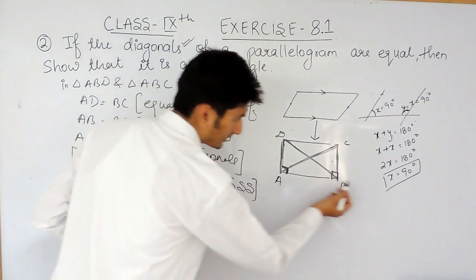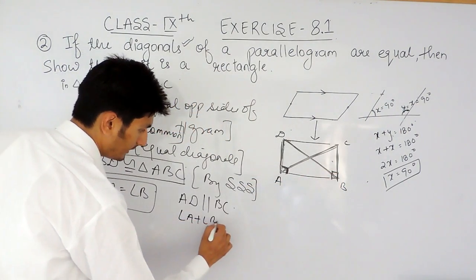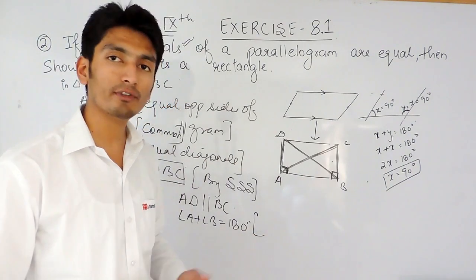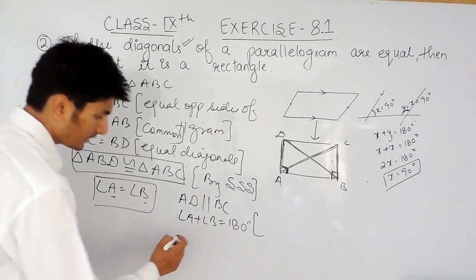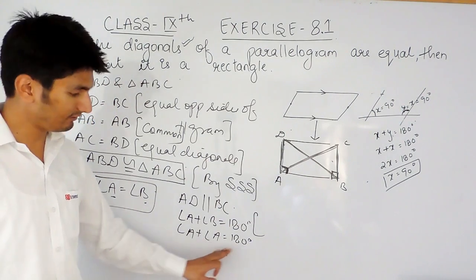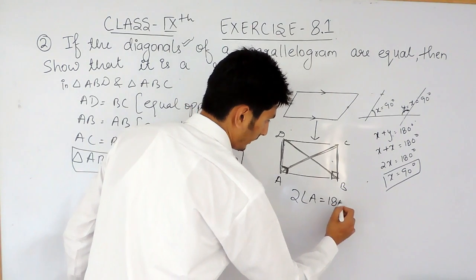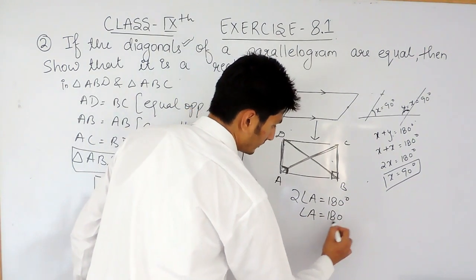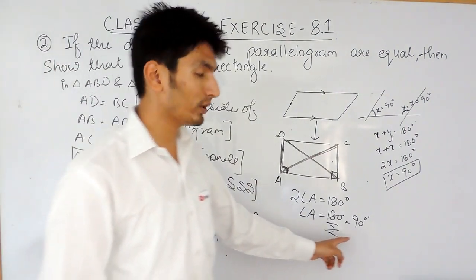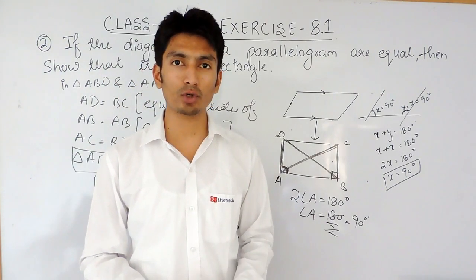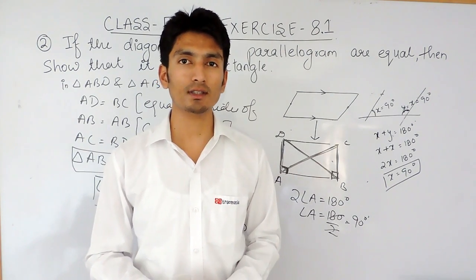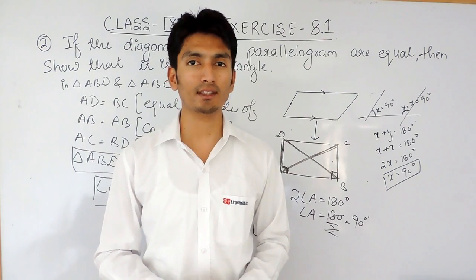Since angle A equals angle B, we can write angle A plus angle A equals 180 degrees, so 2 times angle A equals 180 degrees, which gives angle A equals 90 degrees. If one angle in a parallelogram is equal to 90 degrees, then it is a rectangle. This is how you solve this question. I hope you understood. If you like this video, please subscribe to our channel. If you have any problem in math, you can contact us — the phone number, email address, and WhatsApp number are given in the description. Thank you.